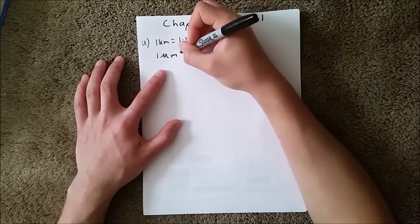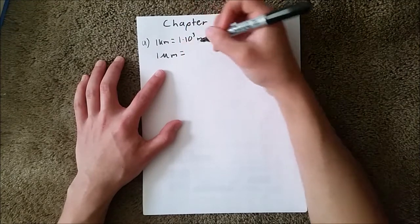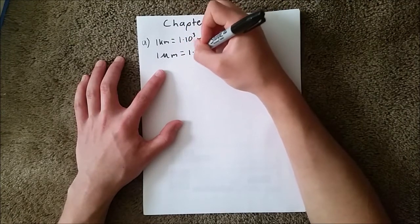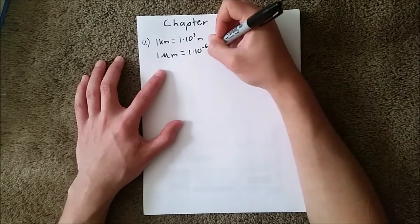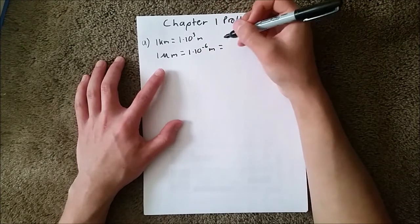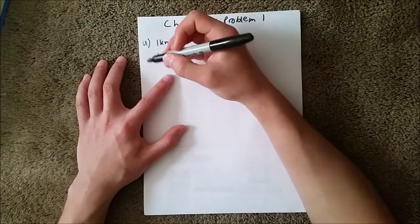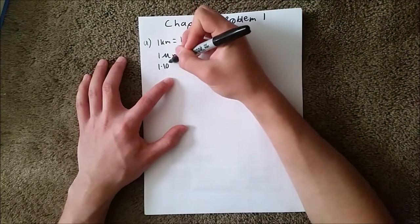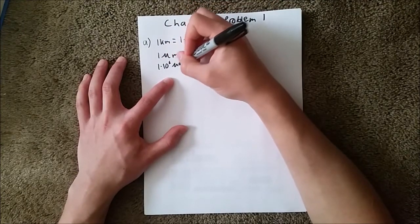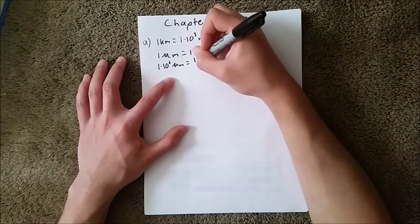And we know that one of those is 1×10⁻⁶ meters, which means that there are 1×10⁶ micrometers in one meter.